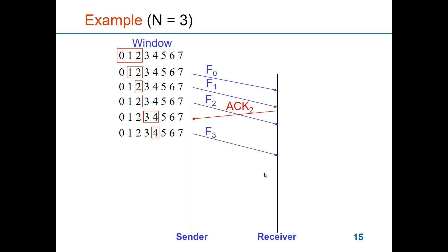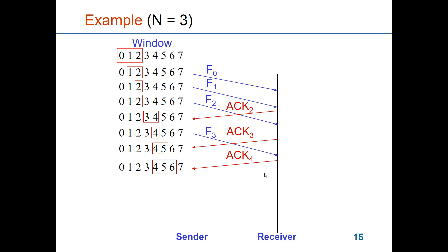The sender sends frame 3, and after having received frame 2 the receiver sends an acknowledgement asking for frame 3 — not knowing it was already underway. So the window can extend by one more frame, allowing frames 4 and 5 to be sent. Eventually an acknowledgement arrives asking for frame 4, all sent frames have been acknowledged, and the window is back to its maximum size of 3.